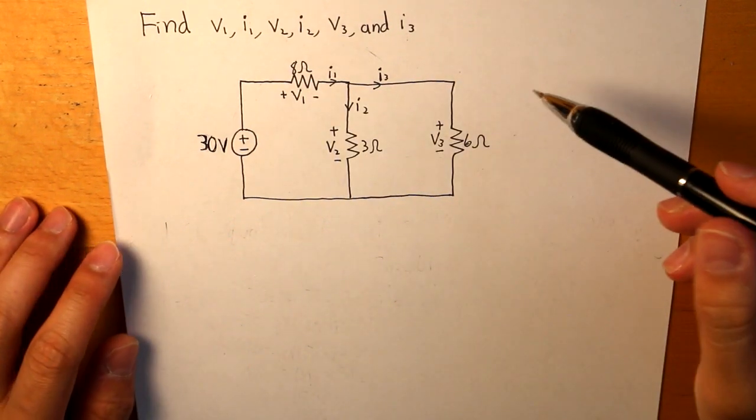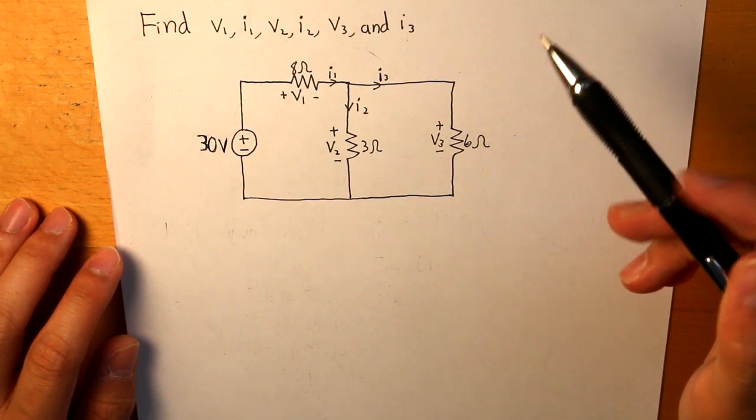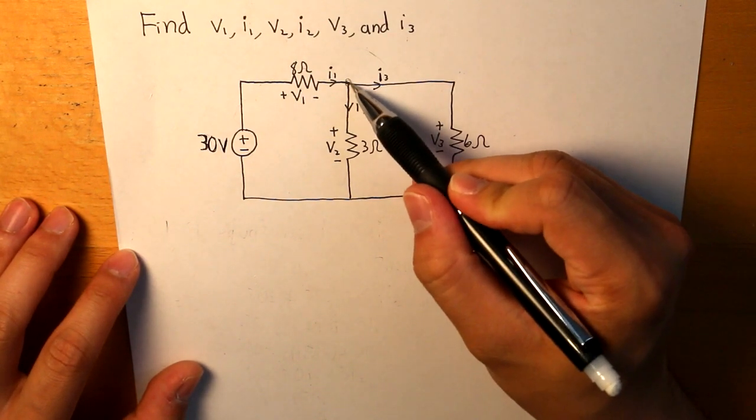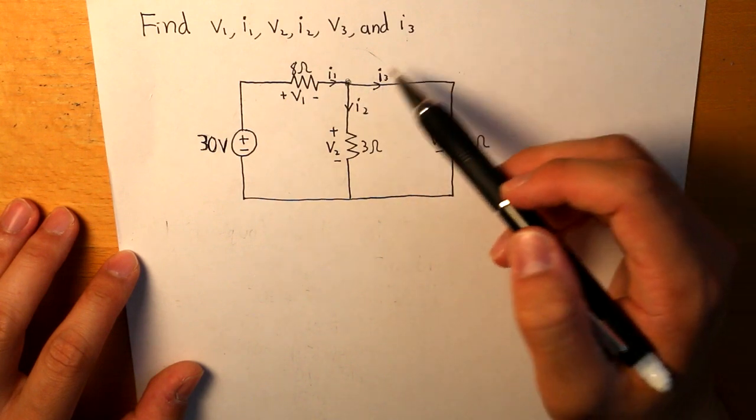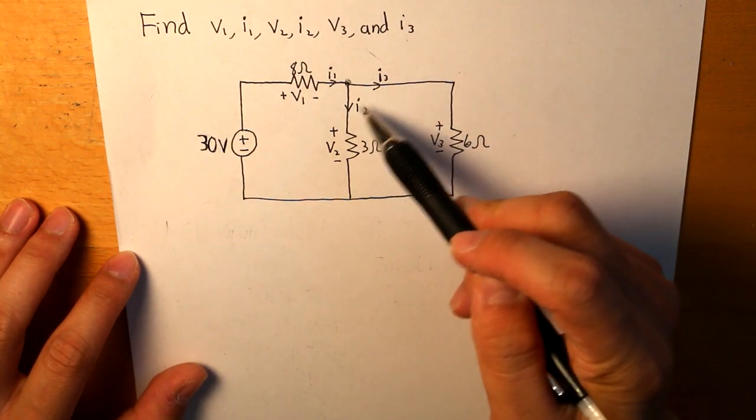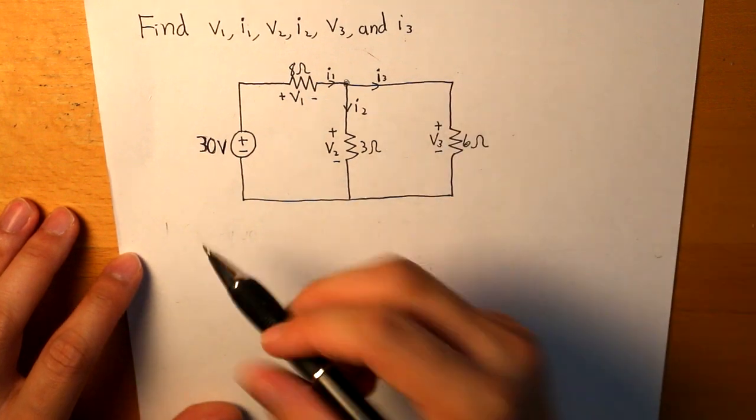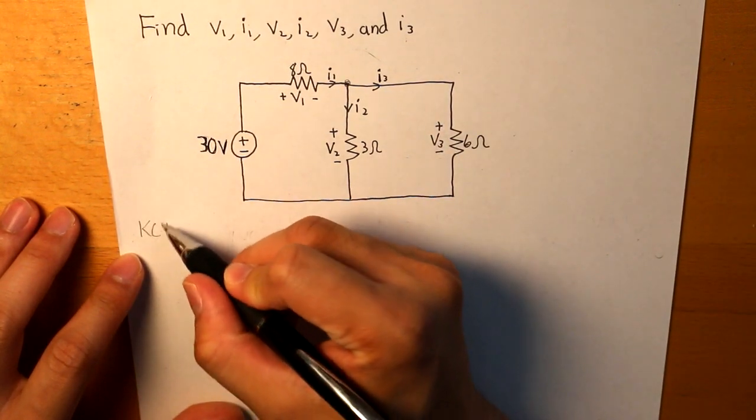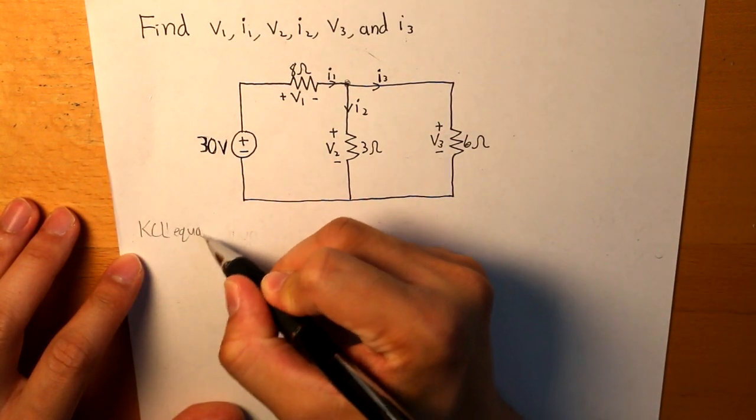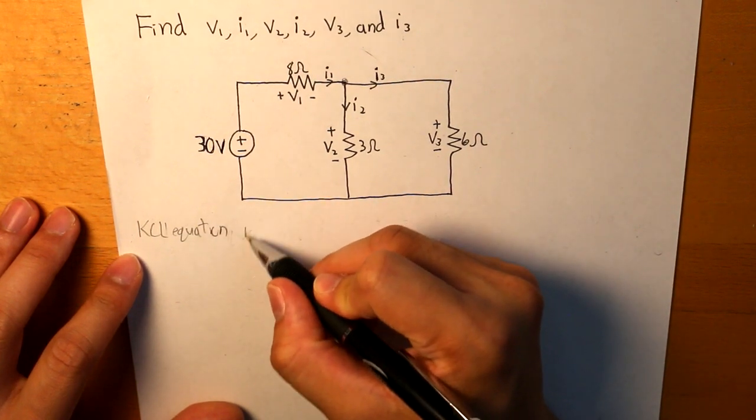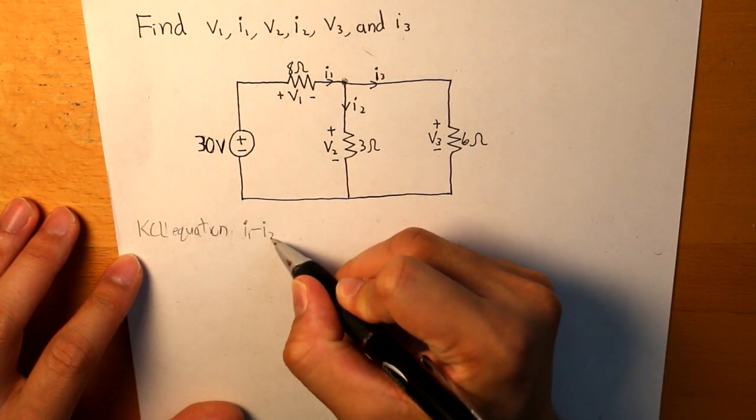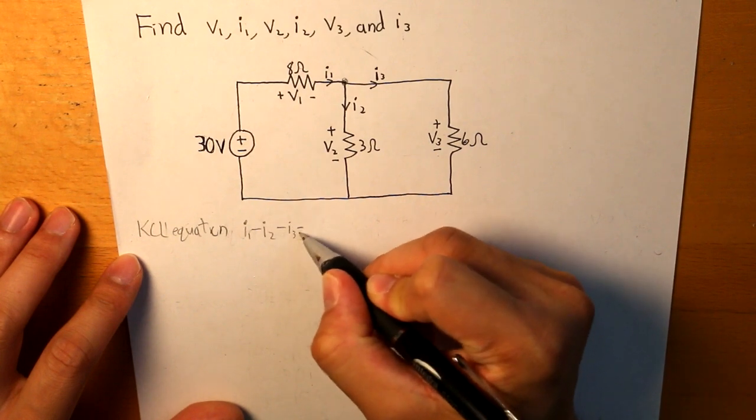So let's first apply KCL within a node. And let's choose this node right here. And we have I1 entering the node, I2 exiting the node, and I3 exiting the node.